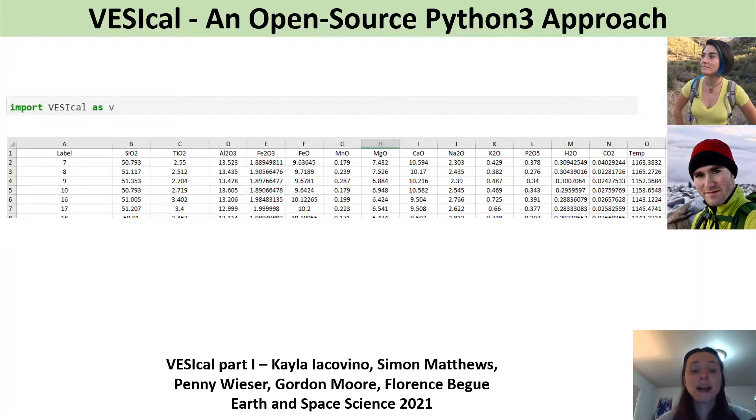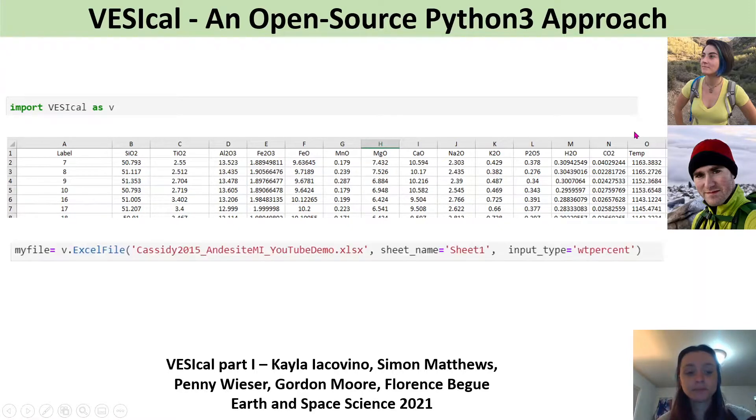You then need to format your melt inclusion data as a spreadsheet. It doesn't matter what order the column headings are in so you can just take them off your probe and add your water and CO2 from FTIR or SIMS and an estimate of your temperature. You then have another line which just loads in the Excel spreadsheet based on its name and the sheet you've put stuff in.